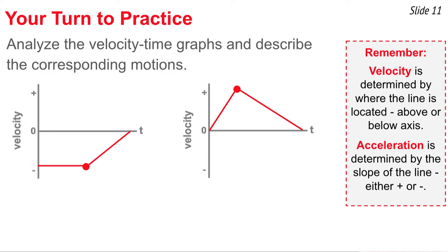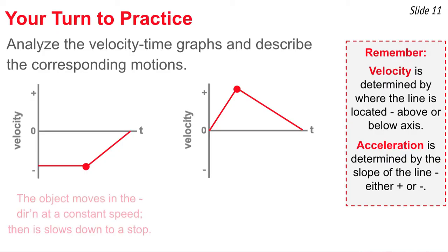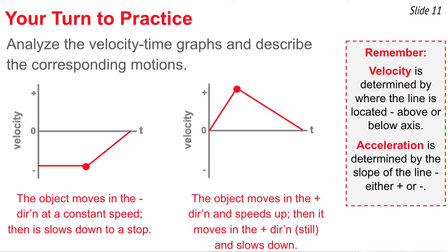For the graph on the left: the line starts below the time axis — negative constant velocity — then becomes diagonal heading toward the axis, meaning it's slowing down. The object moves in the negative direction at constant speed, then continues in the negative direction but slows to a stop, with a positive acceleration during that last stage. For the graph on the right: both lines are above the axis — positive velocity. The first line moves away from the axis — speeding up — and the second heads toward it — slowing down. The object moves in the positive direction and speeds up, then moves in the positive direction and slows down, with positive then negative acceleration.